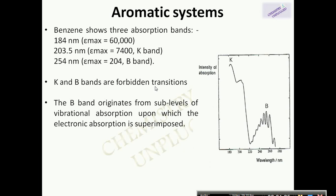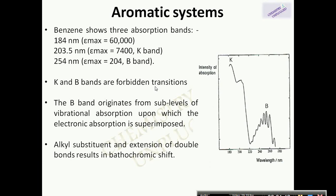and these absorptions are superimposed over the electronic spectrum. This fine structure generally diminishes when we use a polar solvent. If we place an alkyl substituent on the benzene ring, or add an extension of a double bond to a benzene ring, it shows a bathochromic shift, meaning a redshift.